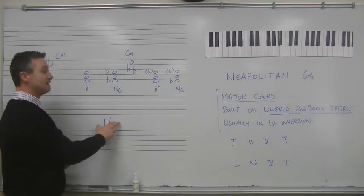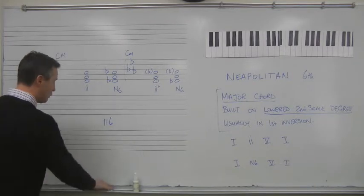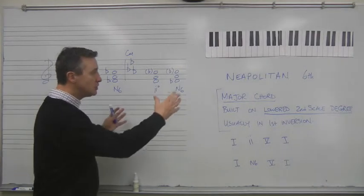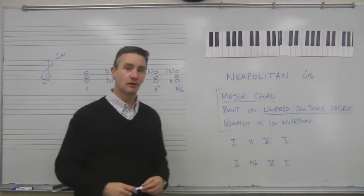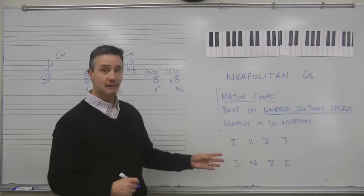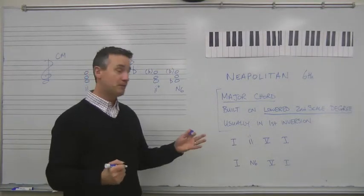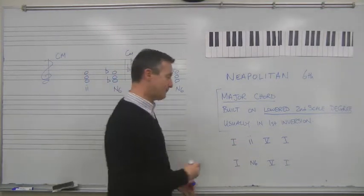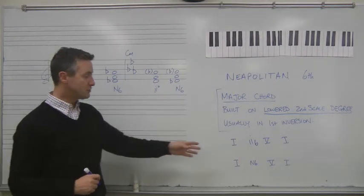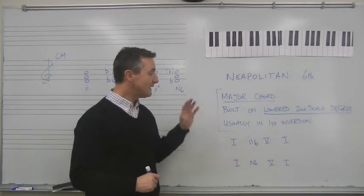And that, obviously, even more, that connects to the Neapolitan in first inversion. So wherever you would use a 2 chord or a 2 chord in first inversion, you can usually use the Neapolitan chord. So, here, for example, is a progression in major. 1-2-5-1. That's a very common progression. It would be an even more common progression, perhaps, if it was 1-2-6-5-1, because that puts the 2 chord into inversion, and this is a very common, very solid progression in major.